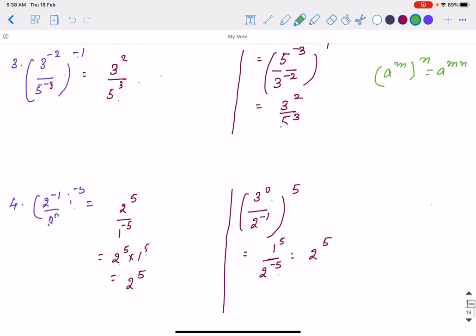One more question here again. 3 minus 2 into minus 1 will be 2, minus 3 and minus 1 will be 5 to the power cube. We multiply the powers. Now you write: 3 square is 9, 5 cube is 125. If it is MCQ, you select the correct option.